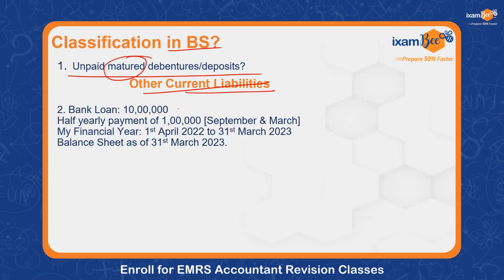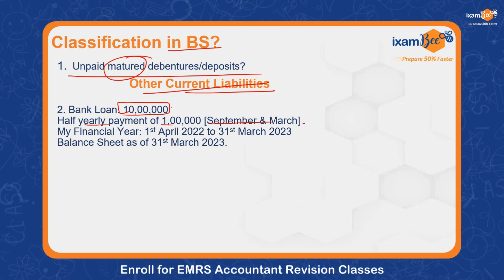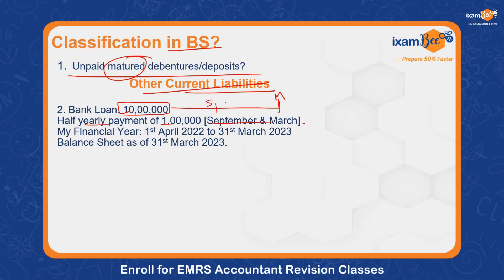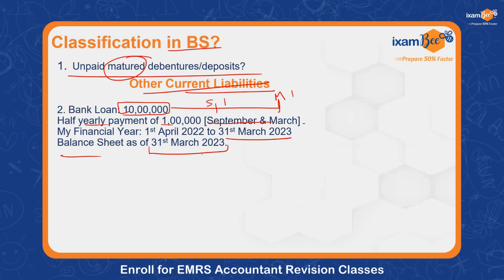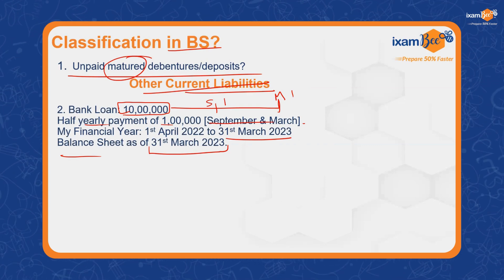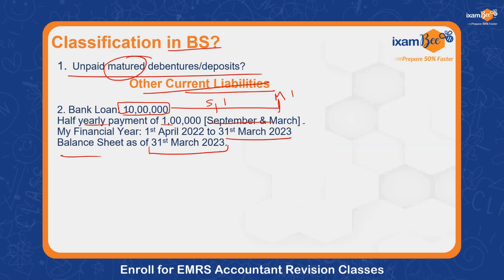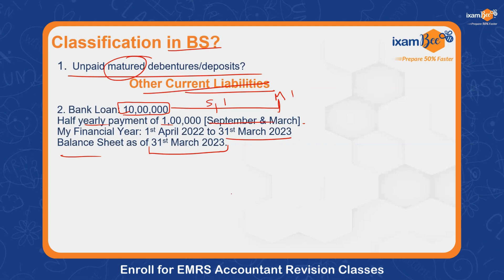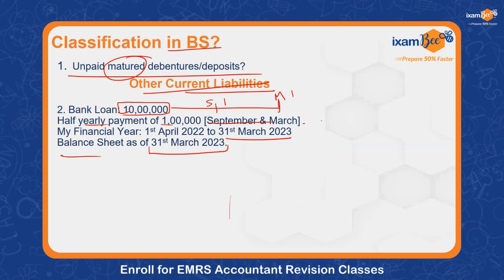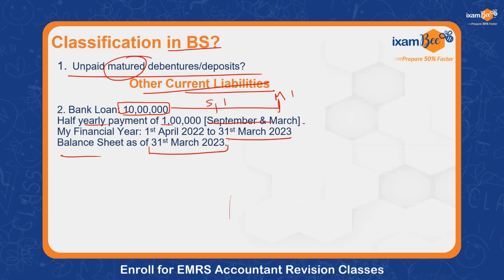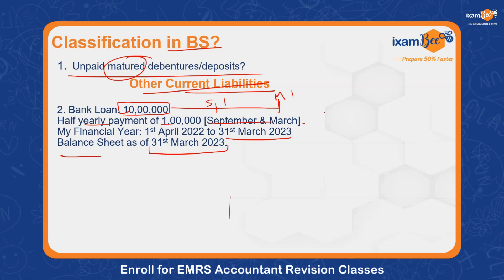Another question: bank loan of 10 lakh rupees with half-yearly payments in September and March — one lakh each. Balance sheet date is 31st March 2023. How much goes in current liabilities and how much in non-current? Non-current: 8 lakh. Current liability: 2 lakh.